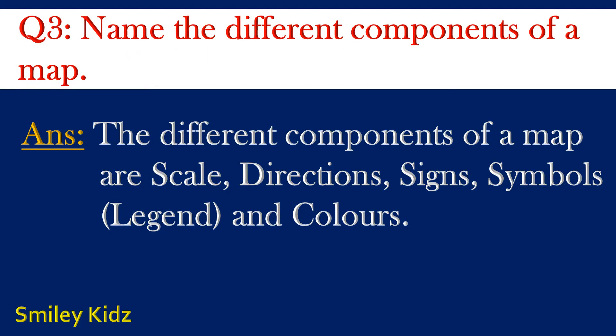Question number 3. Name the different components of a map. Answer. The different components of a map are scale, directions, signs, symbols, legend and colors.